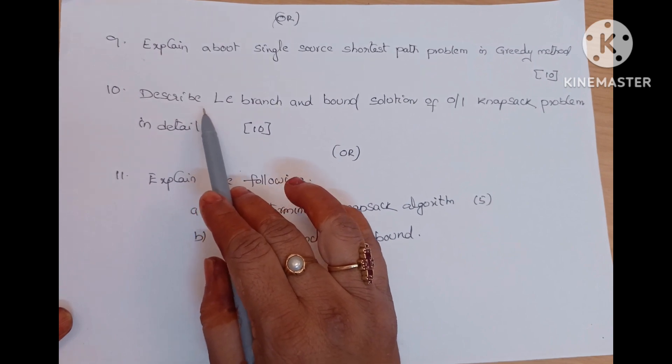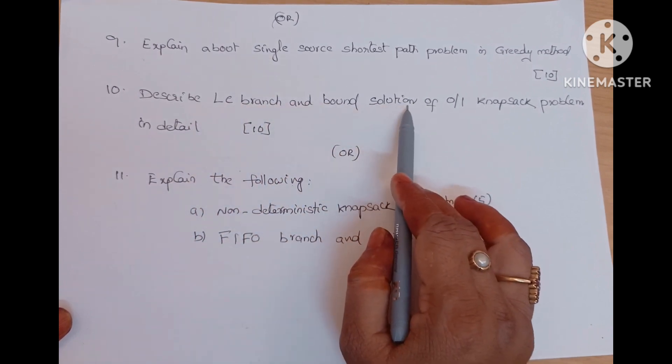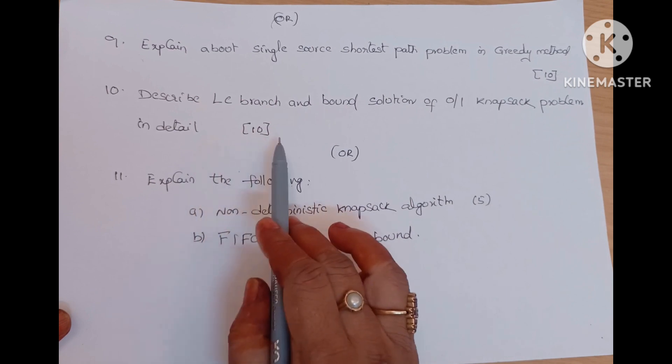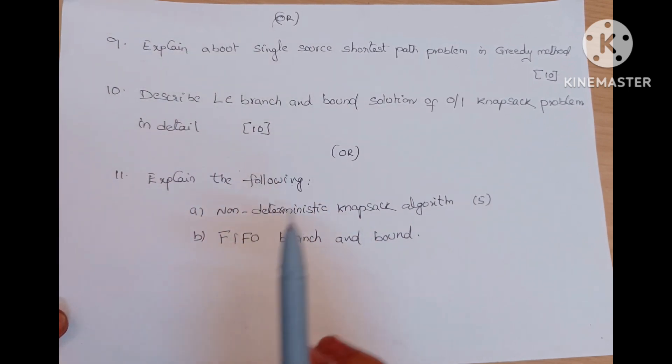Next one is explain about single source shortest path problem in greedy method. Direct question 10 marks. Next last unit. Describe LC branch and bound solution of 0 by 1 knapsack problem in detail. 10 marks question, direct question.